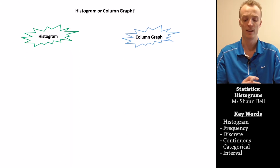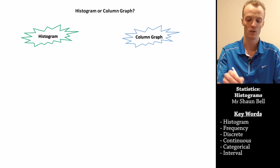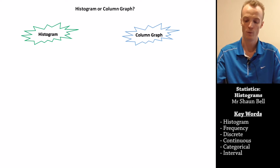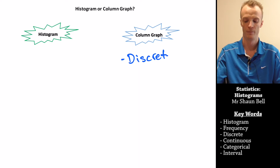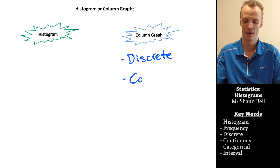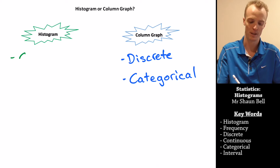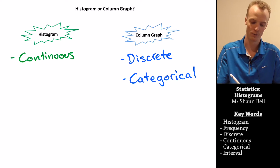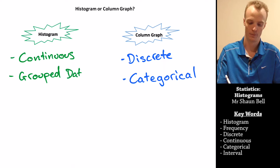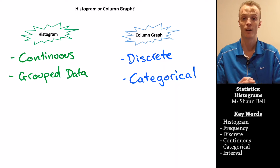Let's work out when we would use a histogram and when we would use a column graph. Column graphs are good for discrete data, and we also use column graphs to represent categorical data. Whereas on the histogram side of things, we use histograms to represent continuous data, but also to represent grouped discrete data.